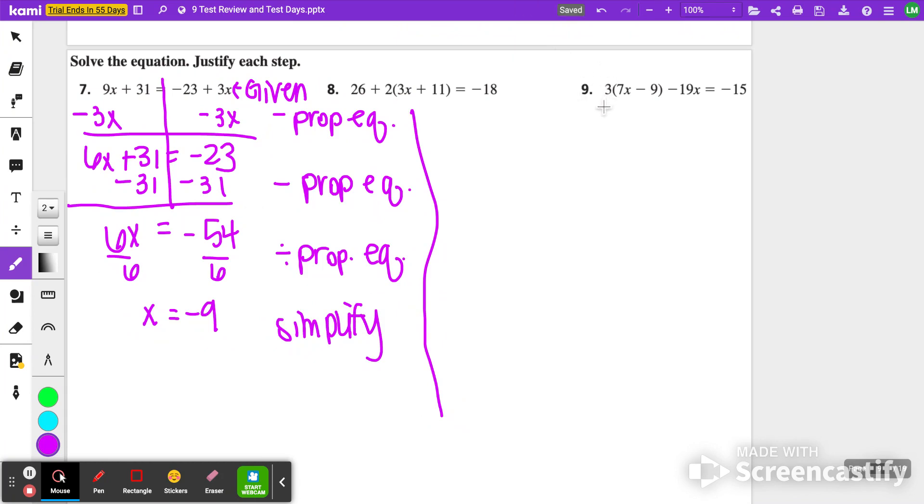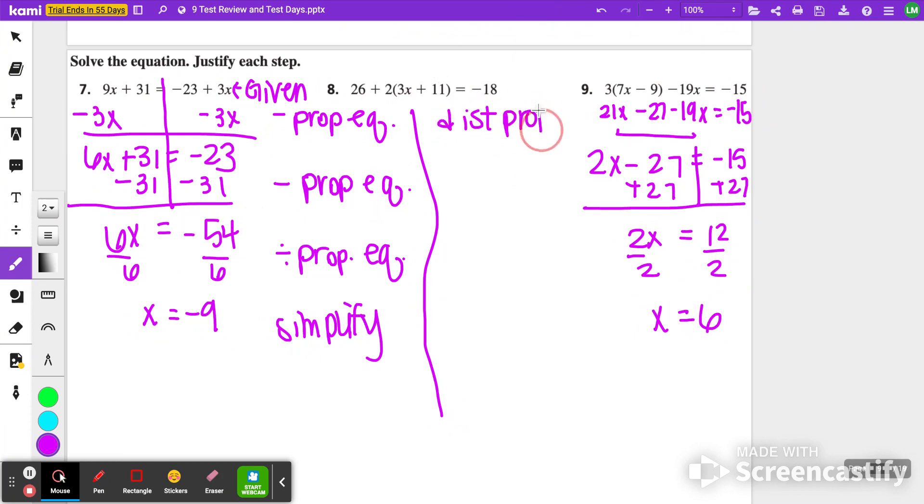For number 9, we are going to distribute first. So 21x minus 27 minus 19x equals negative 15. I'm going to combine like terms. 21 minus 19 gives me 2x minus 27 equals negative 15. Then I'm going to add 27 to both sides. Negative 15 plus 27, so that should be 12 equals 2x. Finally, I will divide both sides by 2, so x equals 6. The first thing I did was distributive property, then addition property of equality, then division property of equality, and last but not least, simplify. This is what I was given.